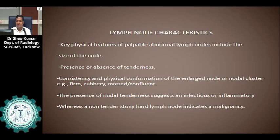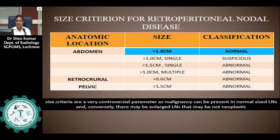Size criteria for retroperitoneal lymph nodes: in the abdomen, if a lymph node is less than 1 cm in short axis, it is normal. A single node more than 1 cm in short axis diameter is suspicious, and more than 1.5 cm is definitely abnormal. If there are multiple lymph nodes each more than 1 cm, that is also abnormal. For retrocrural nodes, more than 6 mm is abnormal.